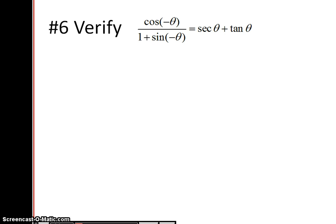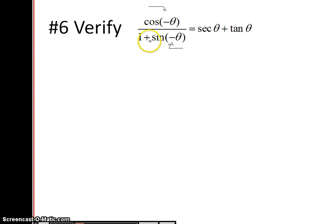This one is another one where something should stand out. Whenever you see a negative out front, you're going to look at the even and odd identities. So pull out your sheet of identities and formulas and look for the even and odd. Cosine of minus theta — looking at the identities — this numerator equals positive cosine of theta. And 1 plus sine of minus theta is 1 minus sine of theta, which you can rewrite using the even and odd identities as minus sine of theta.